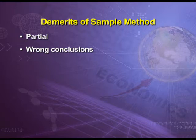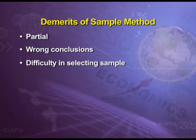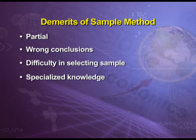The third demerit is difficulty in selecting sample. It is not an easy task to select a sample from the entire population; we face different kinds of difficulties. The last demerit is specialized knowledge — only the person who is expert in statistics or has full knowledge of sample selection can pick the true representative sample which can truly represent the entire population.